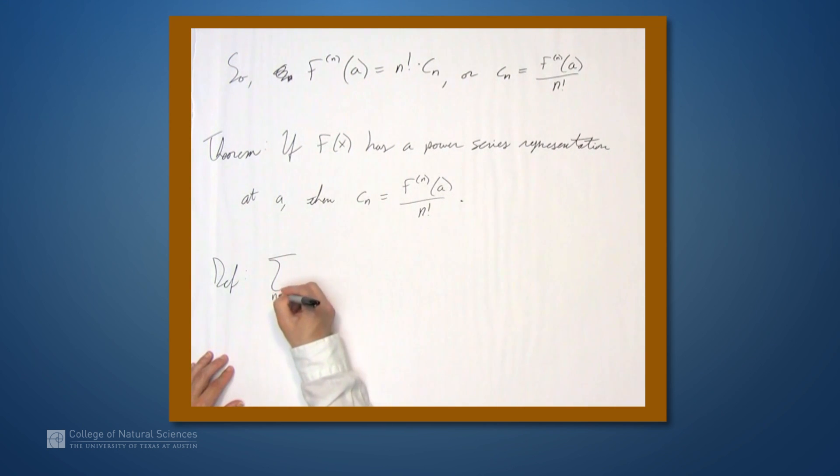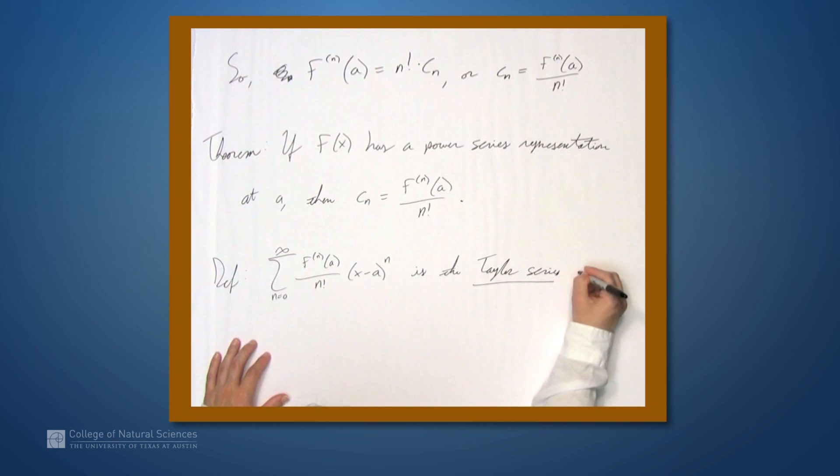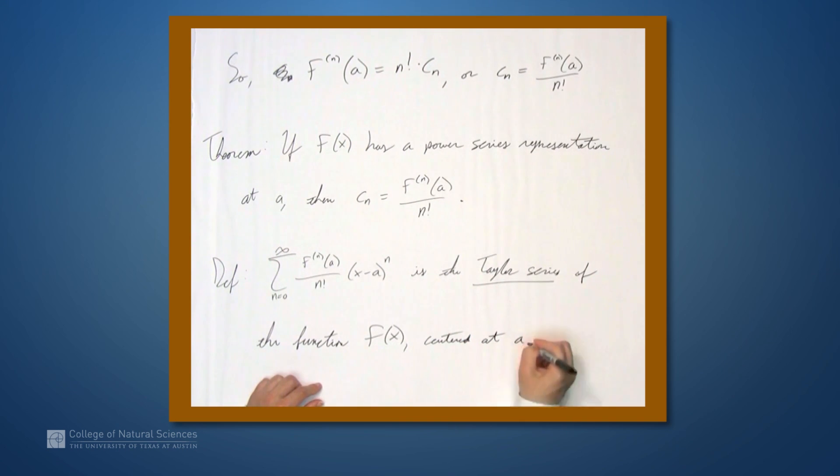And this leads us to our definition. The sum from n equals 0 to infinity of fn at a divided by n factorial times x-a to the n is the Taylor series of the function f of x, centered at a.